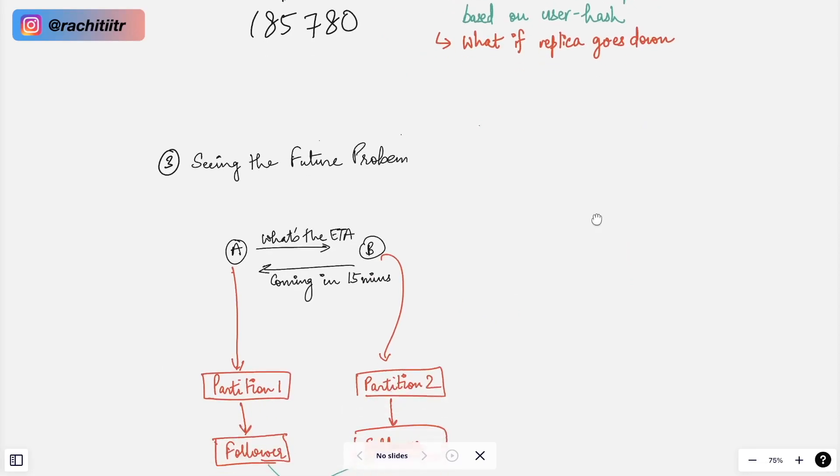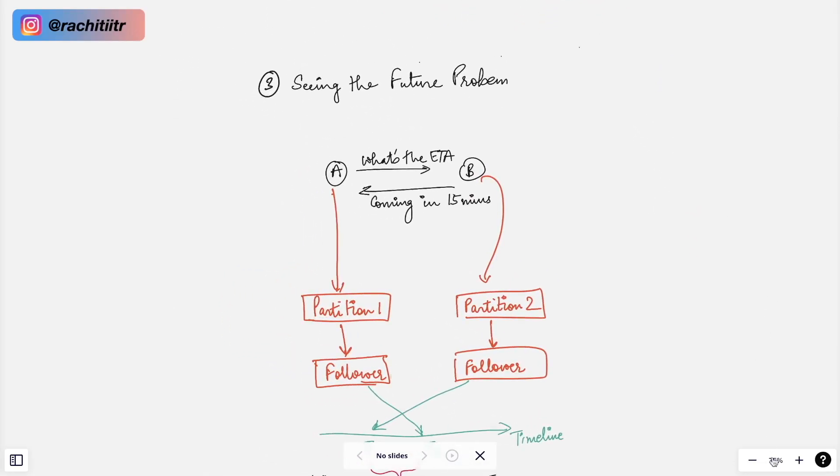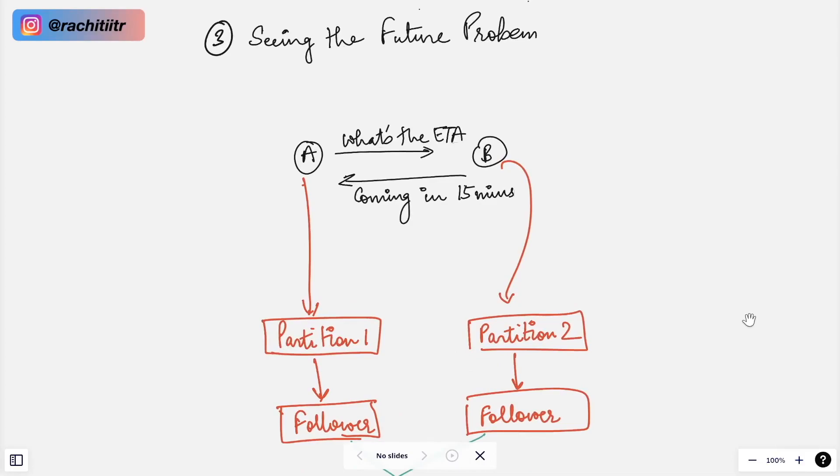Let's move to the other problem which is seeing the future problem. In this particular problem there is a user A having a conversation with user B. There is obviously a web server in between which is handling that communications via web sockets, and the user A says what is the ETA and the user B says coming in 15 minutes. From the point of conversation, user A is having a fantastic experience as well as user B. But let's say there is a group chat which is going on and user C is seeing this in a very different experience. Let me explain.